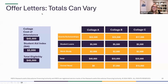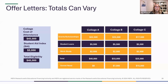One confusing thing about the financial aid process is that when you receive your financial aid offers, they can vary greatly from college to college. Here's an example: three colleges — A, B, and C — all cost $45,000. With an SAI of $5,000, your aid eligibility at all three would be $40,000, and yet this is what you might actually receive when those offers arrive.